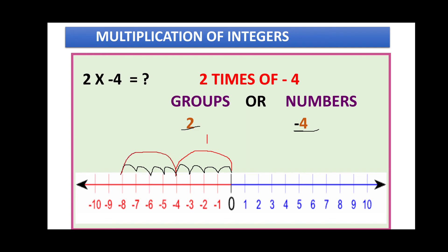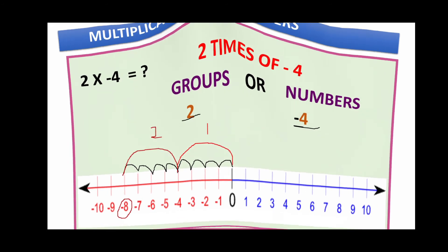From four, we take four more steps: one, two, three, four — four numbers completed, which makes the second group. Our answer is minus eight. So when the result is negative, we move to the left side of zero, that means in the backward direction.